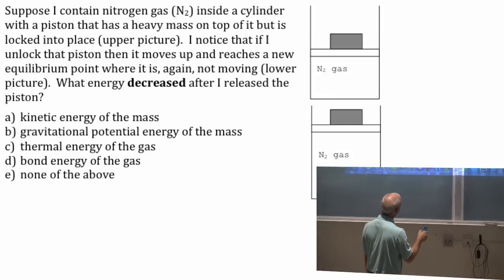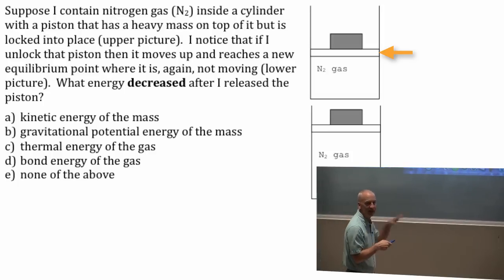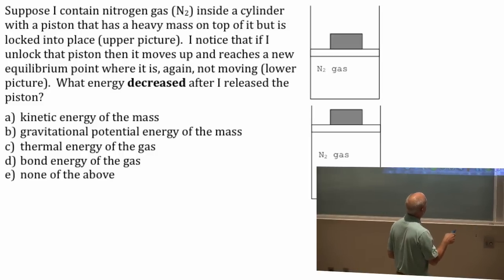This particular piston was locked into place right there. So even though there's a mass sitting on it, that is not the thing that holds it in place. It was locked in here, and the mass just happened to be sitting there. And what happens when I unlock this? Well there's kind of three things that could happen. It could still just sit right there. It could be that the mass applies exactly the right pressure to cancel the pressure of the nitrogen gas.